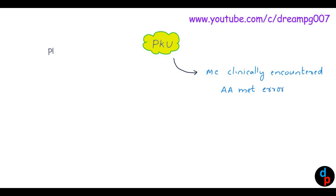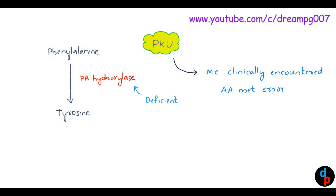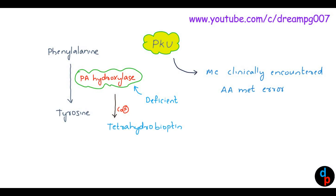In the normal human body, phenylalanine is converted to tyrosine with the help of an enzyme called phenylalanine hydroxylase. When this enzyme is deficient, it leads to accumulation of phenylalanine in the human body. An important point to remember is that the cofactor needed for the proper functioning of this enzyme, phenylalanine hydroxylase, is tetrahydrobiopterin.